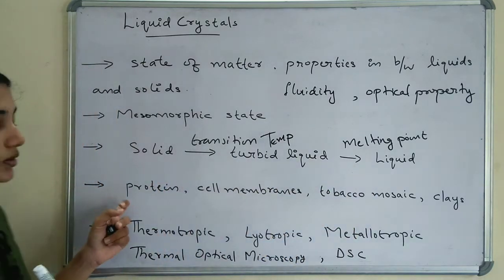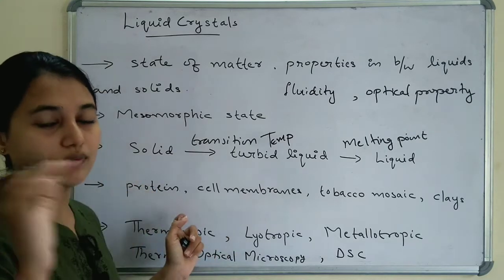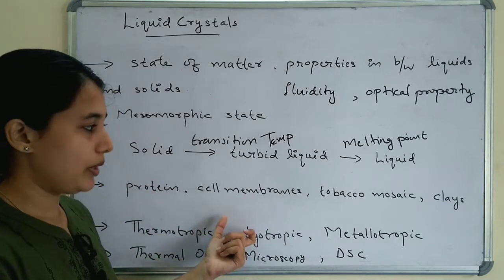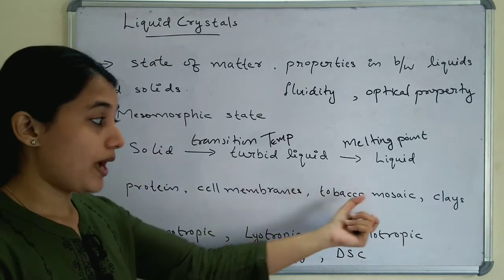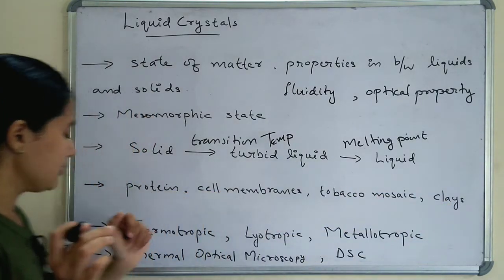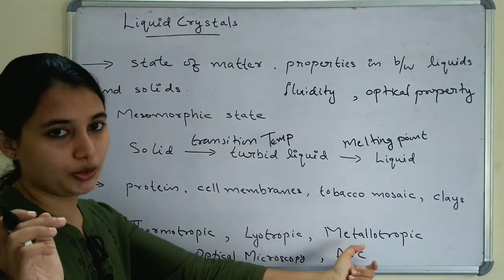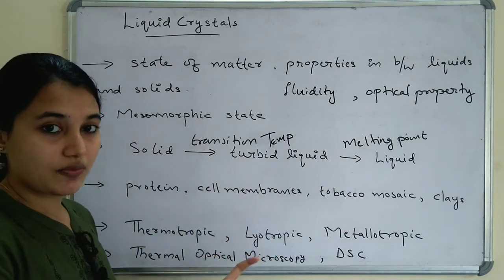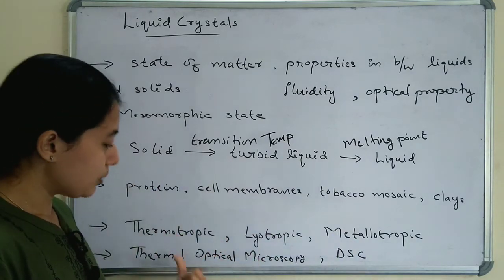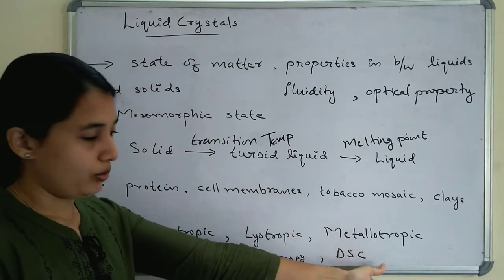General examples of liquid crystals include some cell membranes, tobacco, and some clay. There are three types of liquid crystals in the general classification: thermotropic, lyotropic, and metallotropic.